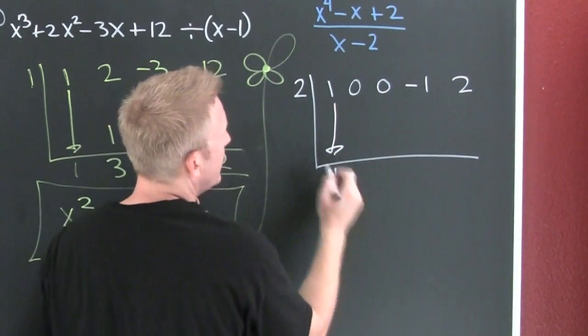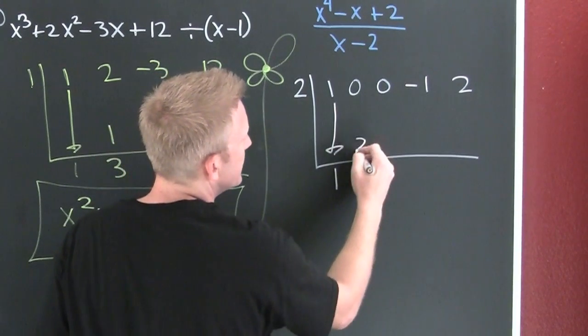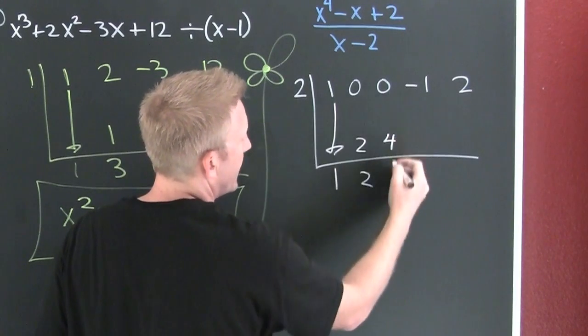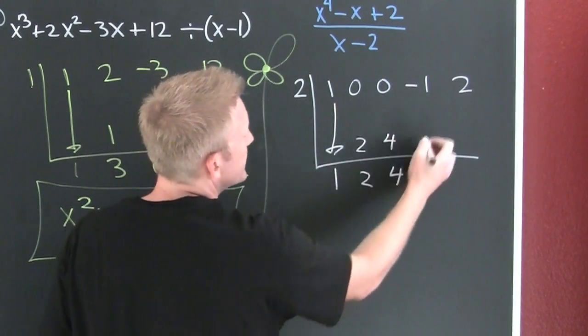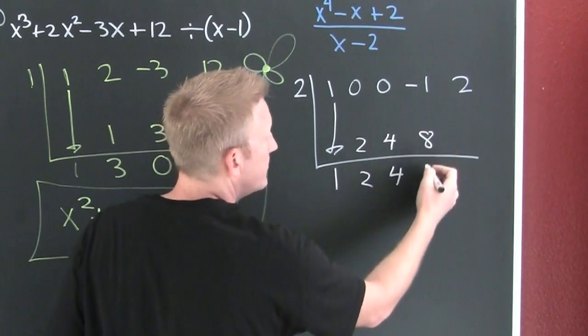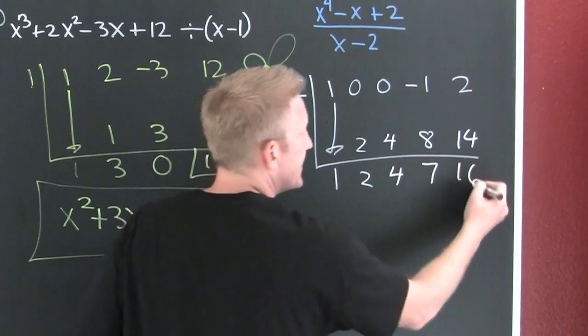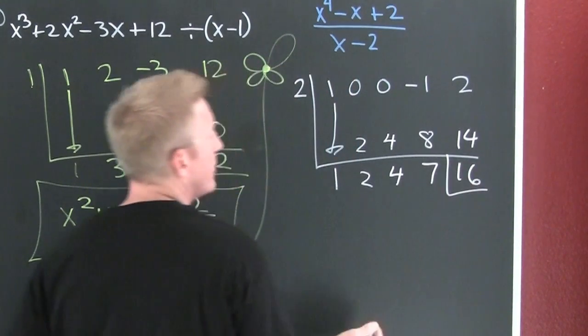There's a 1. 1 times 2 is 2. Very nice. 2 times 2 is 4. Adam, 4. 2 times 4 is 8. That's a 7. 2 times 7 is 14. That's a 16. That's my remainder.